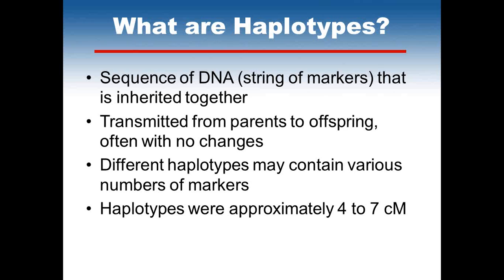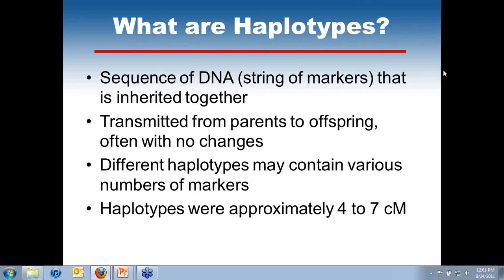What are the haplotypes — a sequence of DNA or a string of markers? They're inherited together, transmitted from parents to offspring, often with no changes. Different haplotypes may contain various numbers of markers, and the haplotypes we'll be talking about are approximately four to seven centimorgans in length.